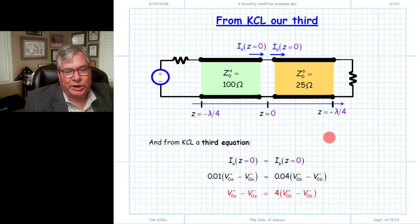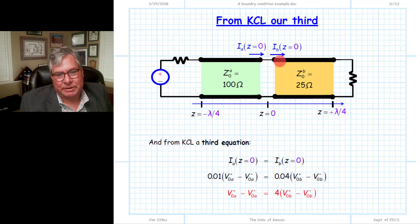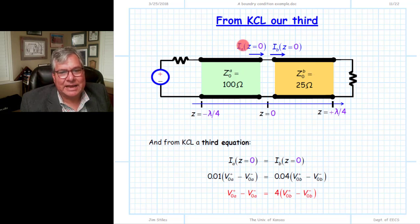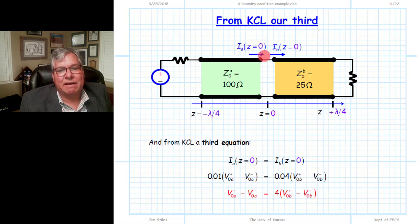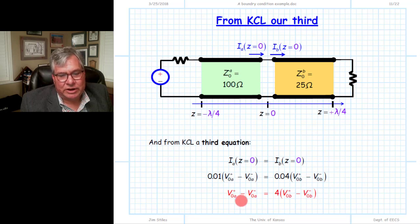We get a second boundary condition equation from this interface at z equals 0 by applying KCL — the current at the end of the first line equals the current at the beginning of the second. We're not saying the current expression across one transmission line equals the other; they're not even defined over the same domain. What we're saying is these functions, when each evaluated at z equals 0, give numbers that must be equal by KCL, yielding another relationship between the wave amplitudes.